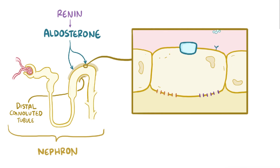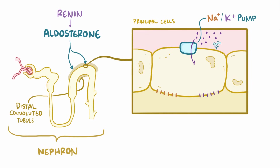First, it stimulates the sodium-potassium ion pumps of the principal cells to work even harder. These pumps drive potassium from the blood into the cells, and from there it flows down its concentration gradient into the tubule to be excreted as urine.